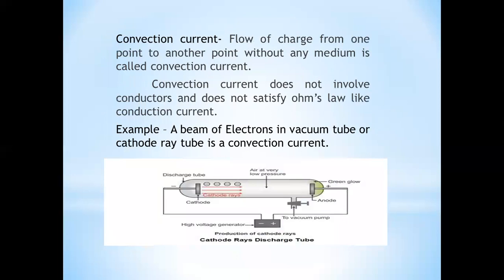Convection current is the flow of charge from one point to another without any medium. Convection current does not involve conductors and does not satisfy Ohm's law, unlike conduction current. An example of convection current is a beam of electrons in a vacuum tube or cathode ray tube.